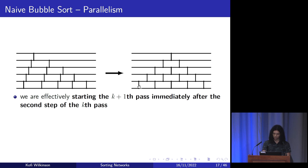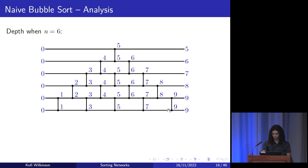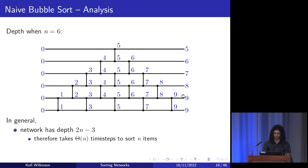When n = 6, the depth of this network works out to 9. In general, a network constructed like this will have depth 2n − 3. Therefore, it takes Θ(n) time steps to sort n items, which is already a big improvement from the n log n we saw earlier. But we can still do better than this.